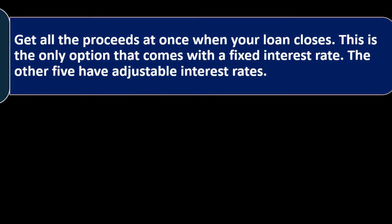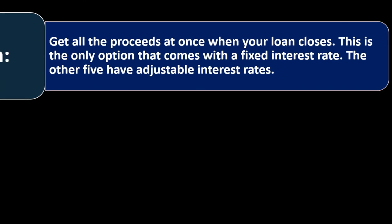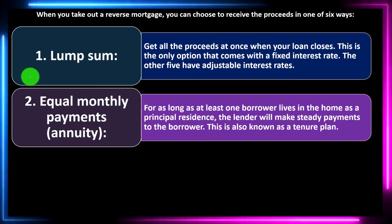When you take out a reverse mortgage, you can choose to receive the proceeds in one of six ways. Number one: lump sum — get all the proceeds at once when your loan closes. This is the only option that comes with a fixed interest rate. The other five options have adjustable interest rates, so you need to take that interest rate into consideration.